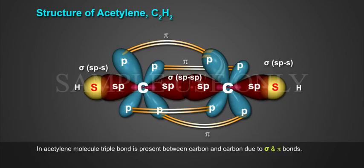In acetylene molecule, triple bond is present between carbon and carbon due to sigma and pi bonds.